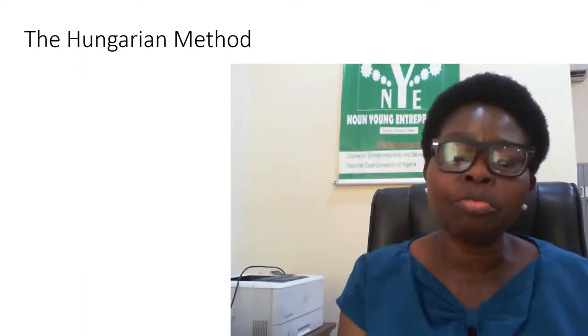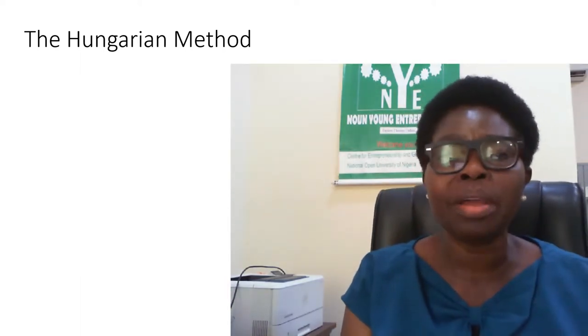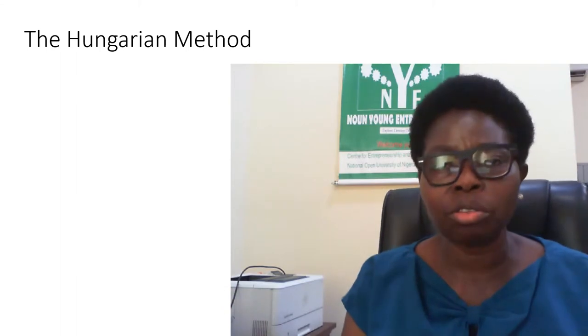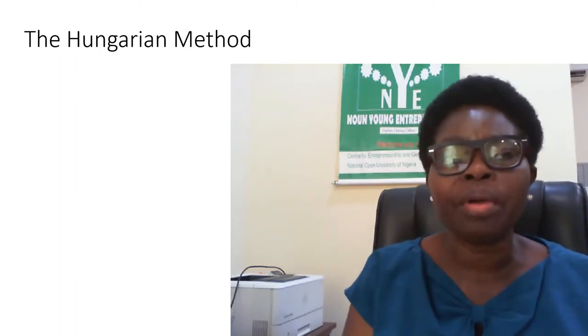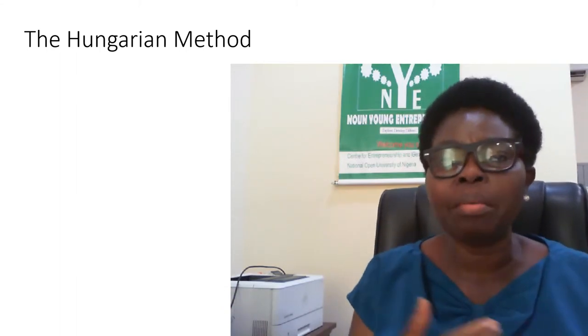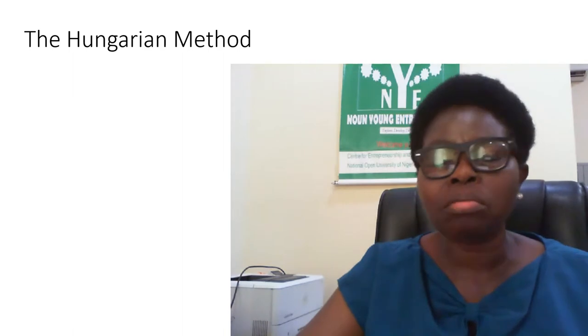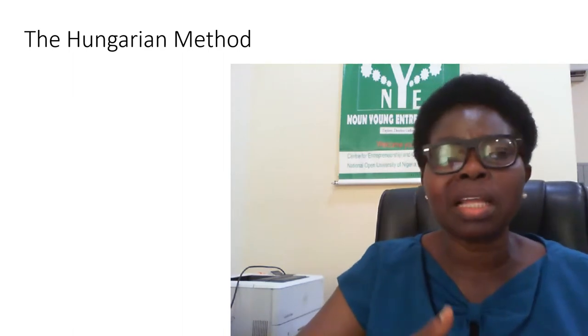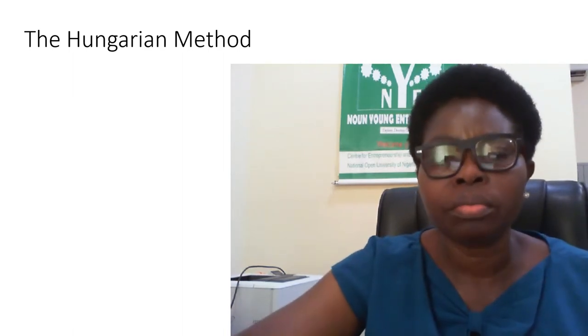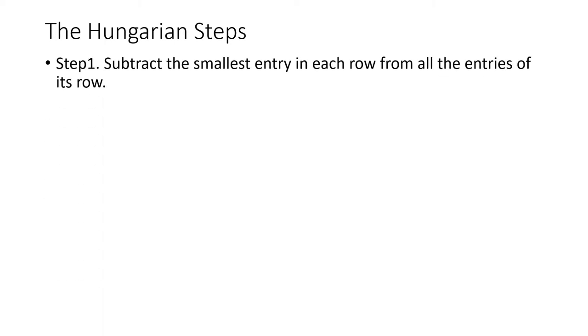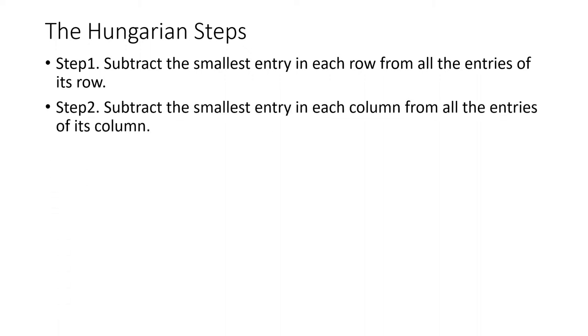The popular method used for solving the assignment model is the Hungarian Method. Let's look at the steps in using the Hungarian Method. The first step is to subtract the smallest entry in each row from all the entries of that row.